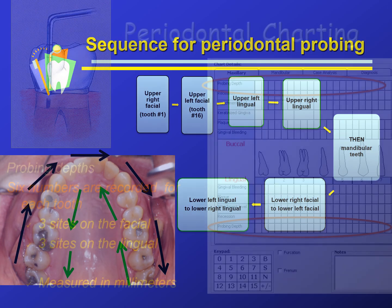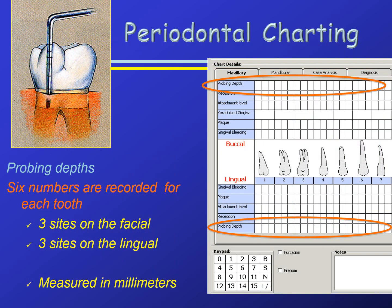The probing depths are recorded in these rectangles. There are 6 numbers recorded for each tooth — 3 sites on the facial and 3 sites on the lingual. The orange ovals indicate where this information is recorded. There is an area for the facial (the upper orange oval), and the area for the lingual of the maxillary is where the lower orange oval is located. The figure on the left depicts how we measure pocket depths.